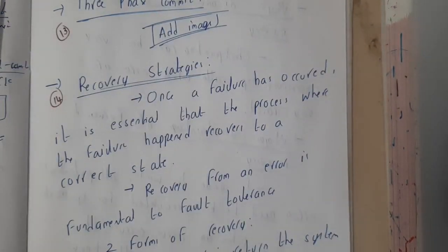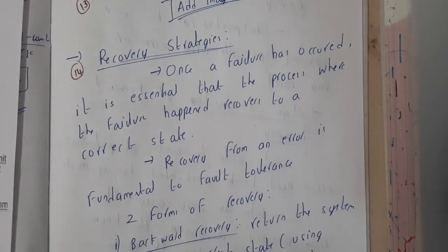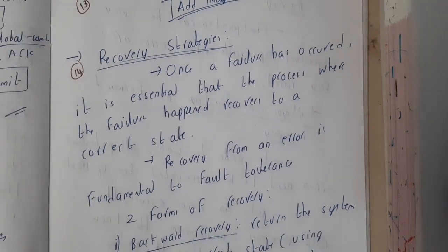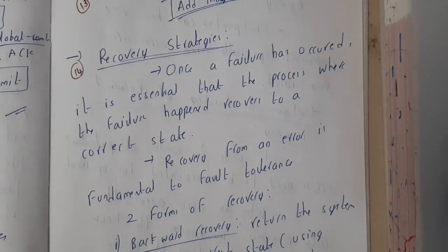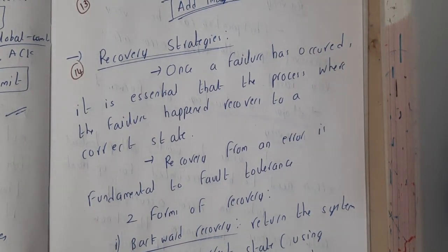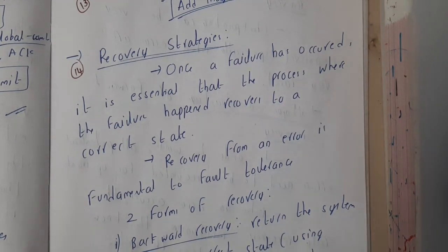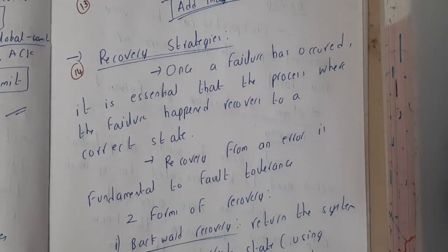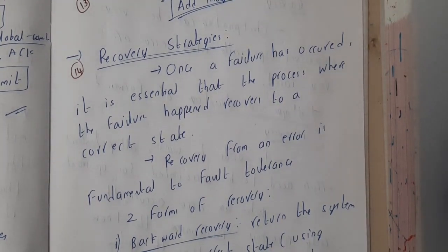In the next lecture, we will be discussing about recovery strategies. We discussed commit and all those things — so if something goes wrong, how can you recover? Are there any methods or strategies which we can use? We will be discussing those things in our next lecture. Thank you, thanks for watching.